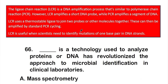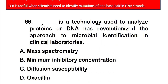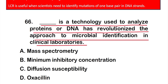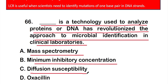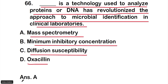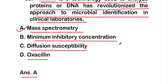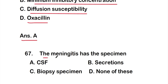Question 66: Which technology used to analyze proteins or DNA has revolutionized the approach to microbial identification in clinical laboratories? Options: A: mass spectrometry, B: minimal inhibitory concentration, C: diffusion susceptibility, D: oxaline. The right answer is option A: mass spectrometry is used to analyze protein or DNA.